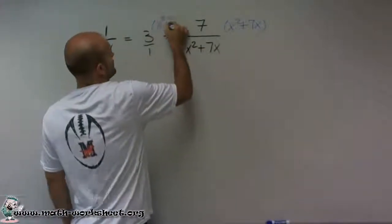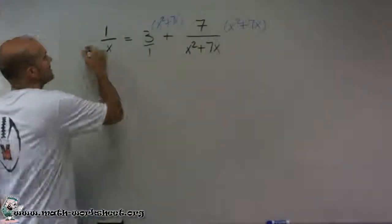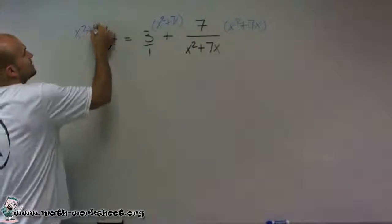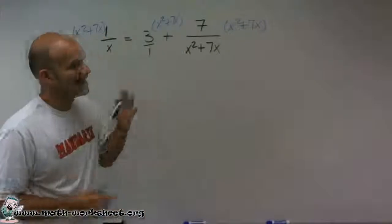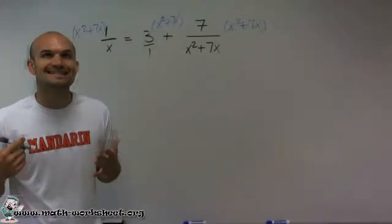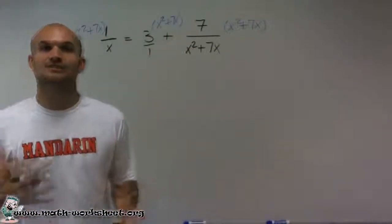So I'm going to multiply every term times x squared plus 7x. And it's really important for you to understand you have to multiply every term by x squared plus 7x to keep equivalent equations in your solution.